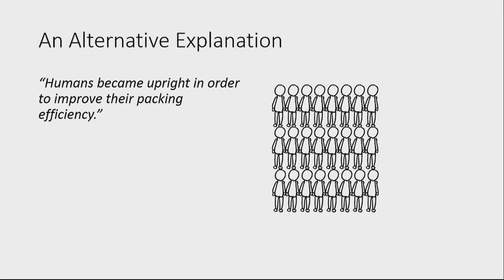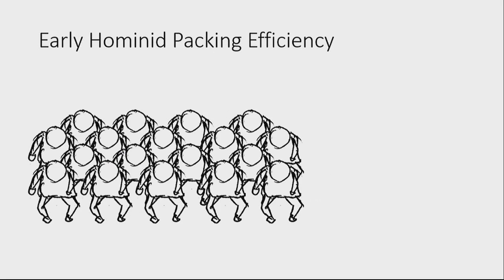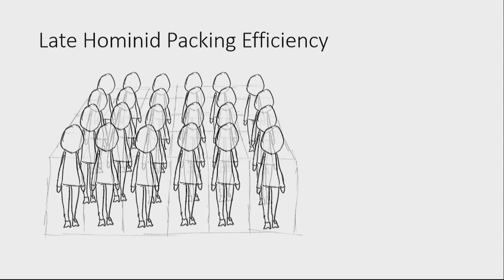This is part of a broader principle which says that all social animals experience a selection pressure to pack as efficiently as possible. We're going to start with a very simple model. Here we have some early hominids, as drawn by Darwin himself. The kind of shape you'd use to model them is, well, it's a sphere. And the packing efficiency of a single layer of spheres in 3D is just over 50%. Whereas a modern-day human is much more like a tall cuboid, which has a packing efficiency of 100%.